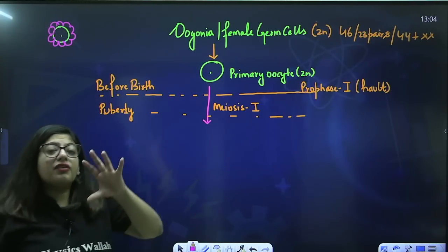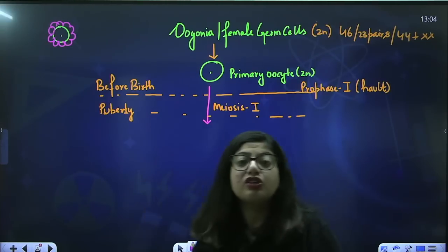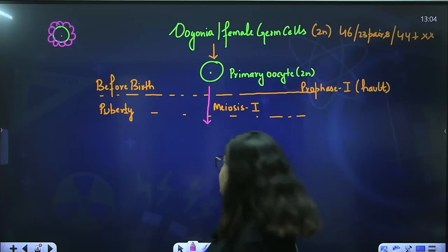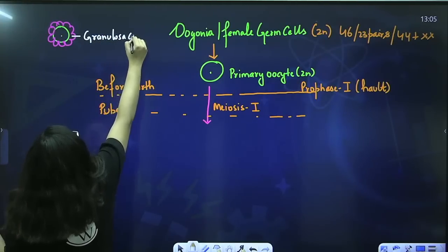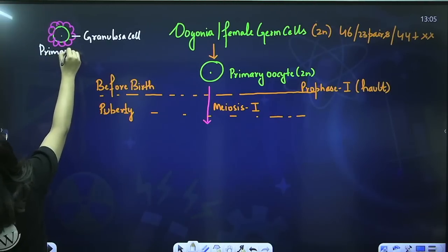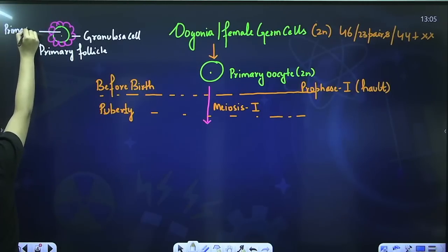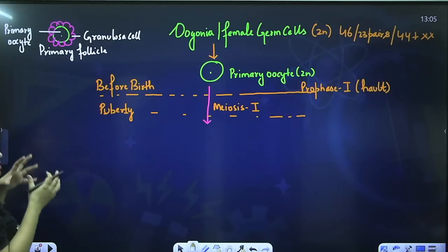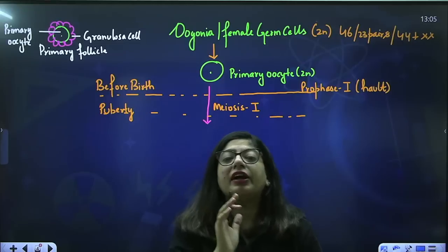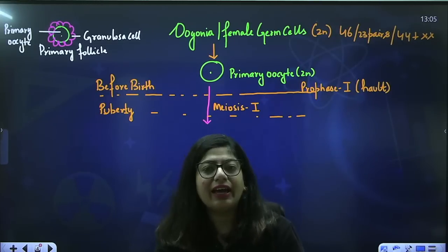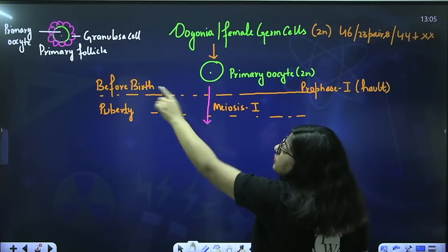When a female is born she has a number of primary oocytes. Primary oocytes are considered queen cells — they are surrounded by a lot of nurse cells called granulosa cells. The structure formed is called a primary follicle. This primary follicle contains a primary oocyte surrounded by granulosa cells. If you look at the ovary of a female, you can find numerous primary follicles. When a female is born she has around 2 to 20 lakh of these primary follicles.